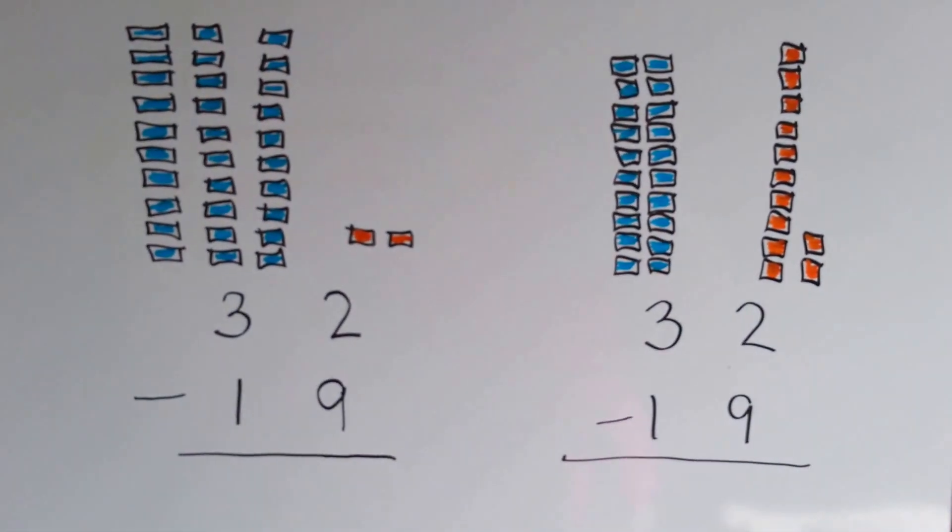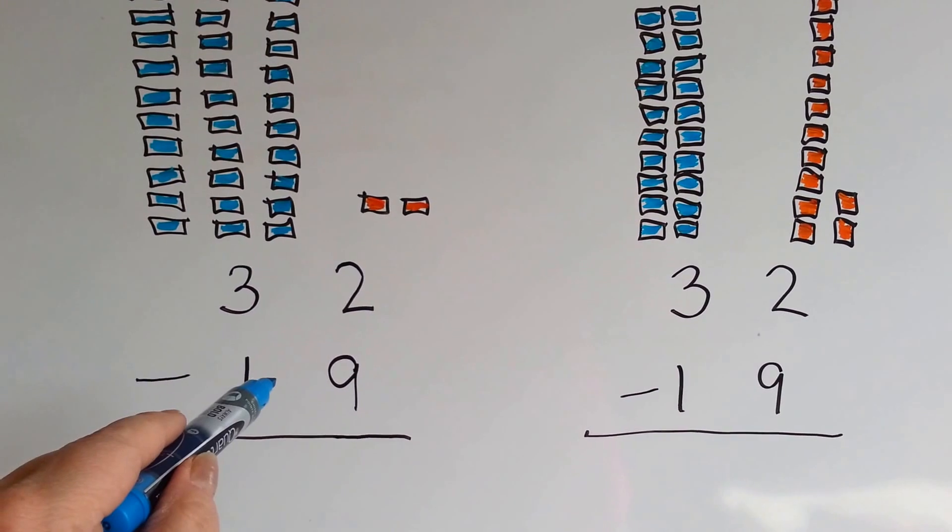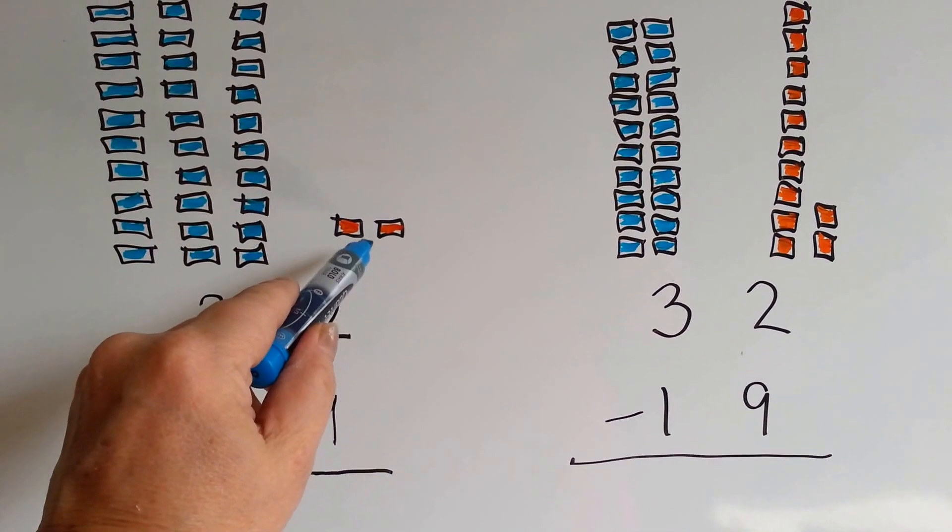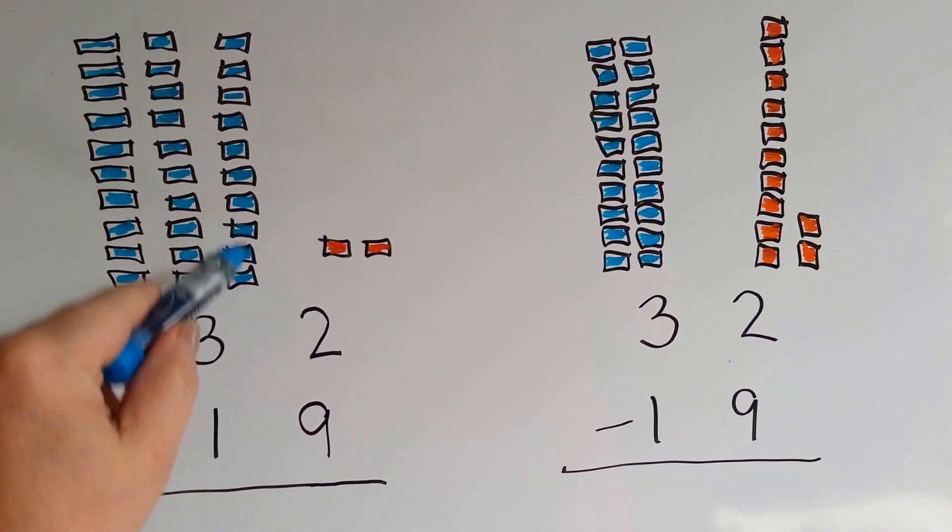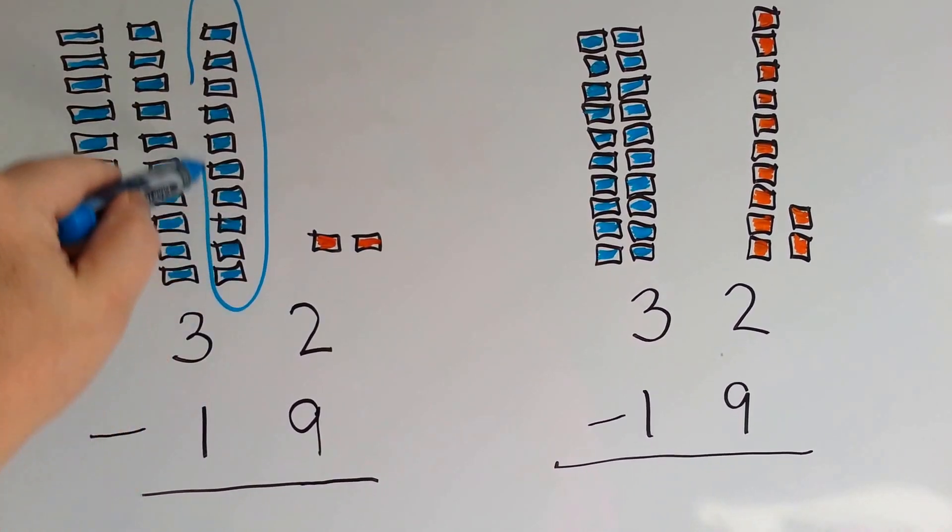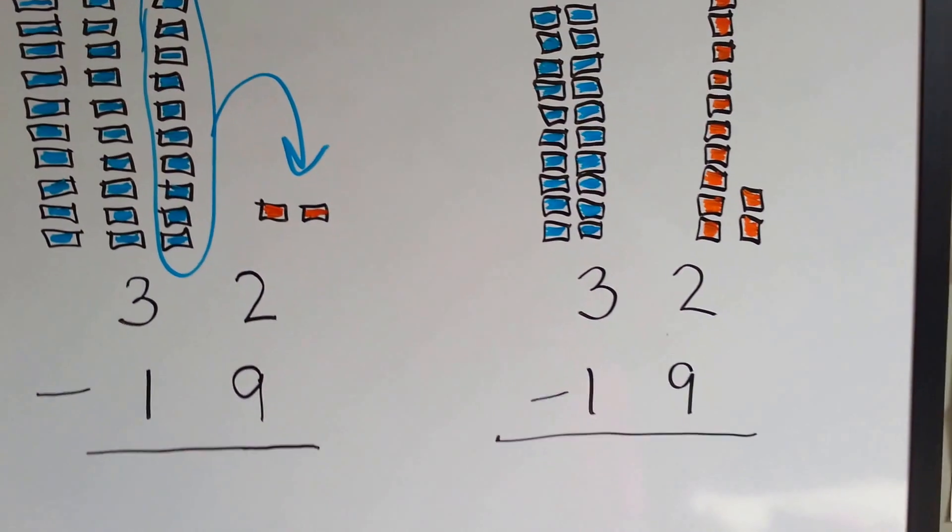Now for subtraction, if you've got 32 and you need to take away 19, you can't have 2 and take 9 away. Can you take 9 away from these two? No. So what you need to do is take some from this one, and this whole entire group here needs to come over to the ones place. This is how we do it.